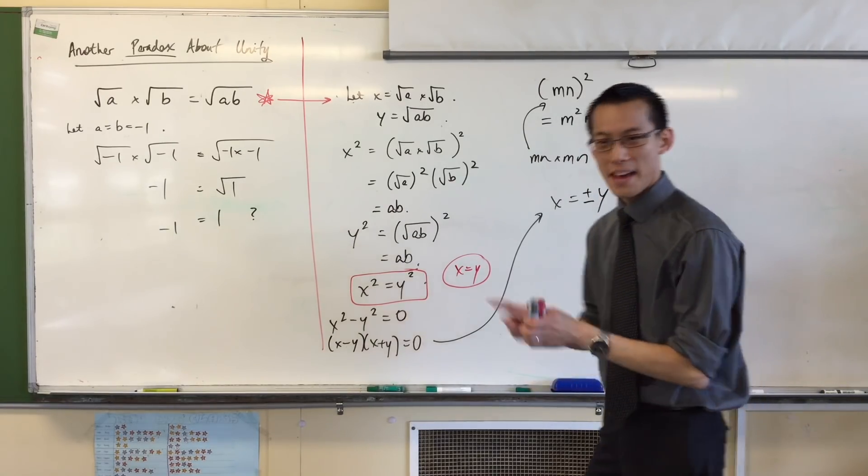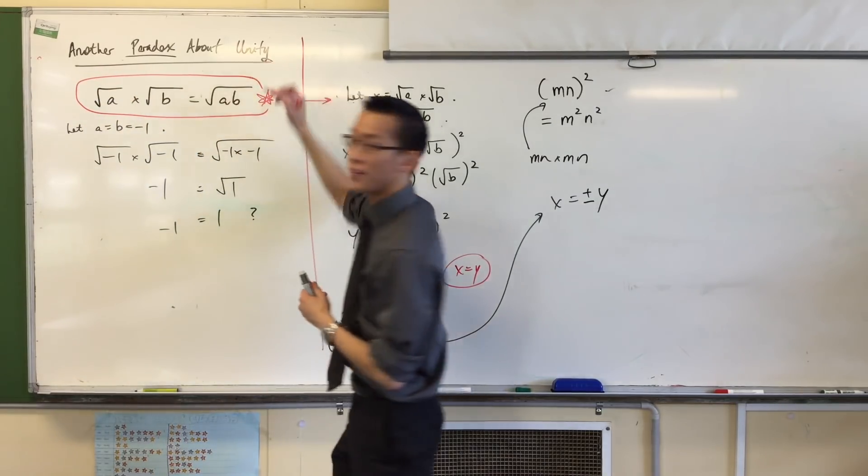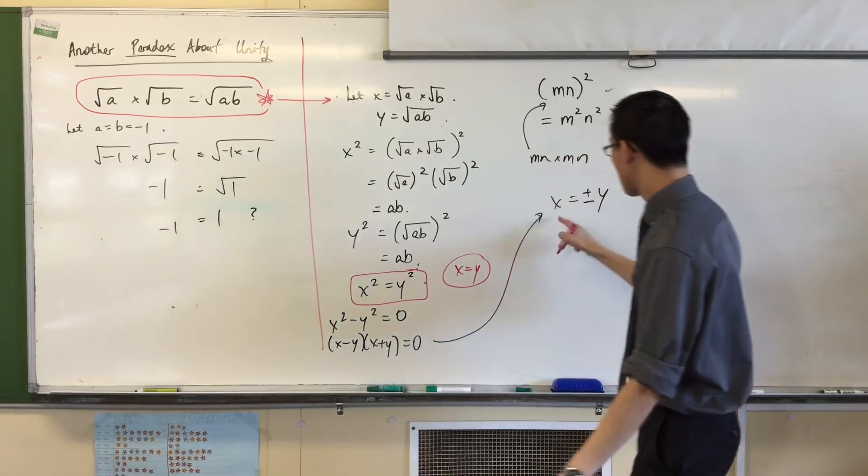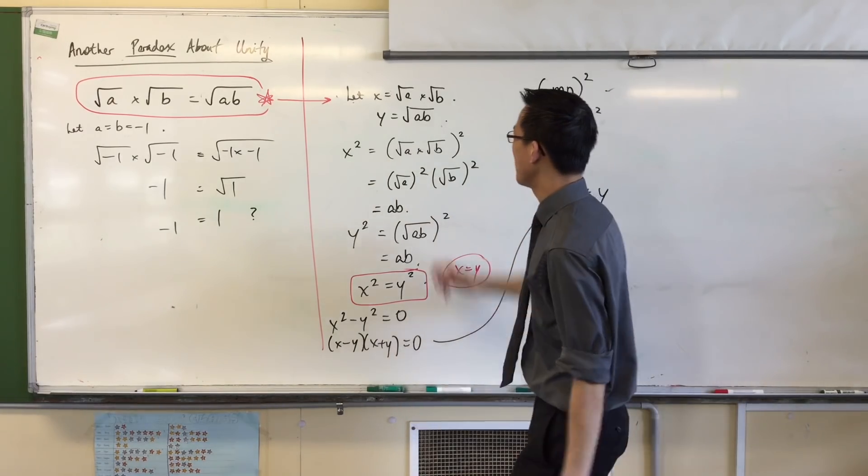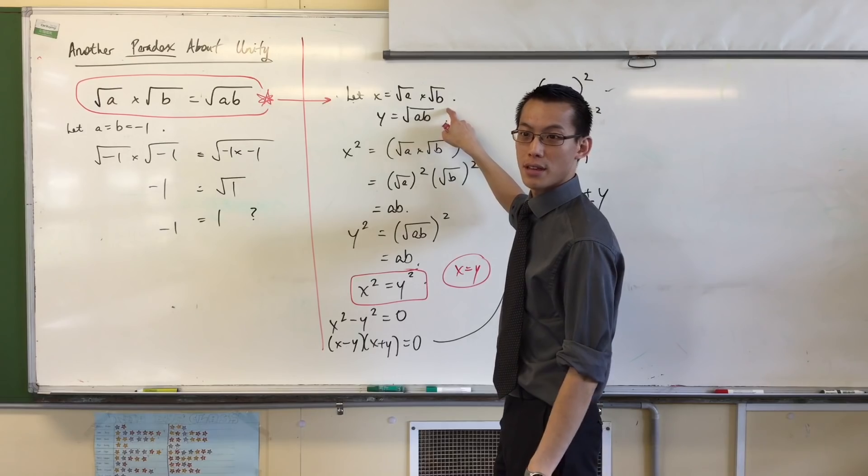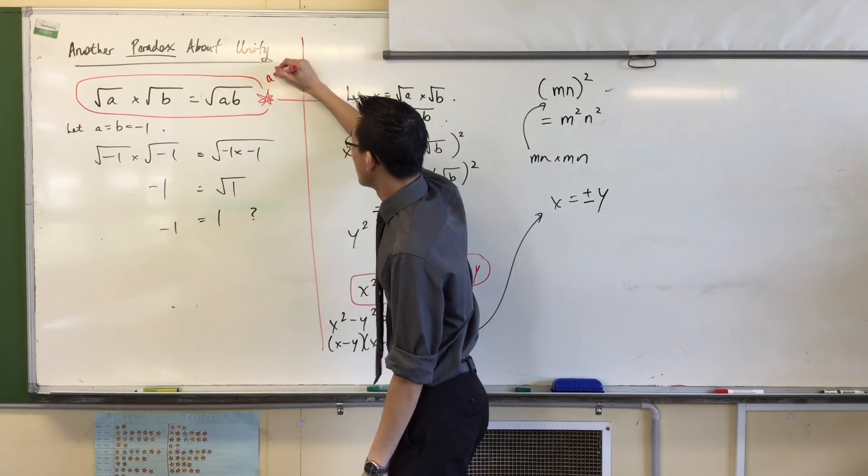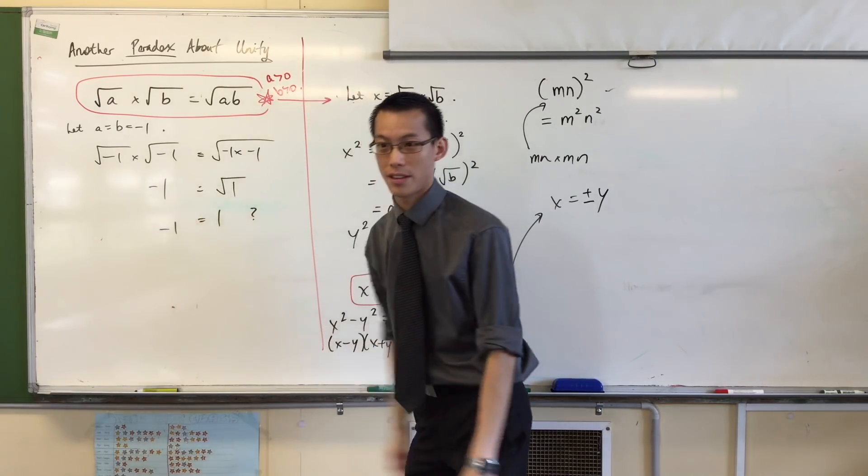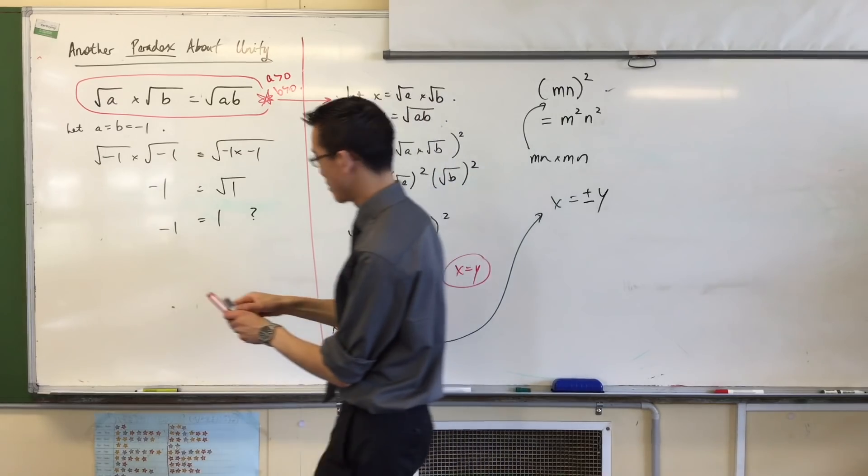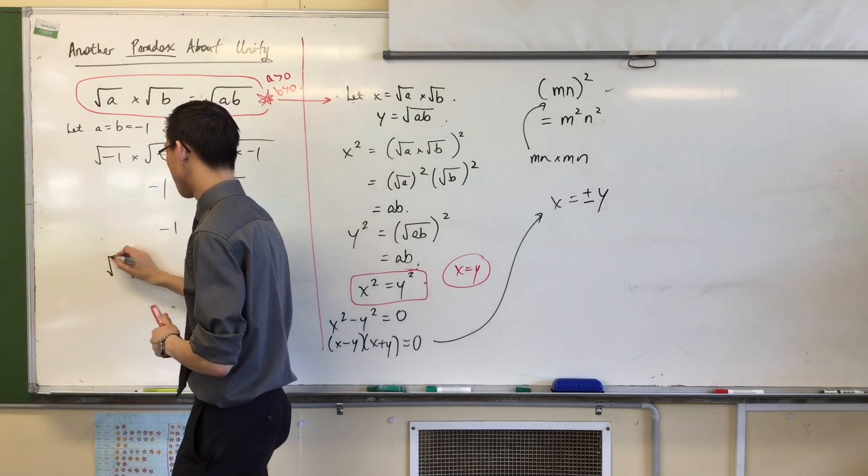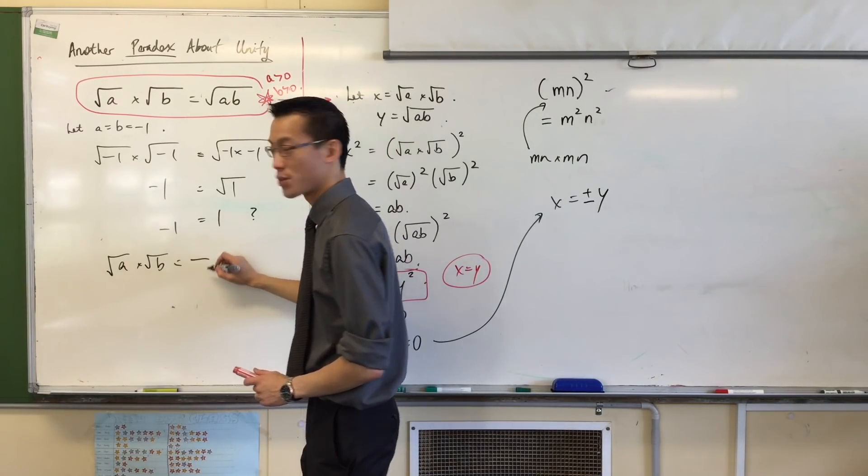So, what does that mean? That means that this, this is only half of the truth. It is true. x does equal y a lot of the time, but it only equals y when a and b are positive. If a and b are positive, this is all good. So, really what we're supposed to say is a has got to be greater than zero and b has got to be greater than zero. If they're negative, then, in fact, √a × √b, sometimes it's equal to, not √ab, but negative √ab.